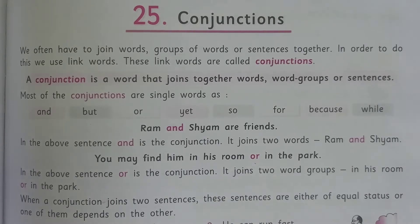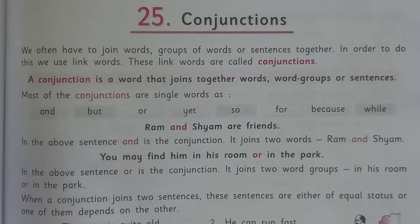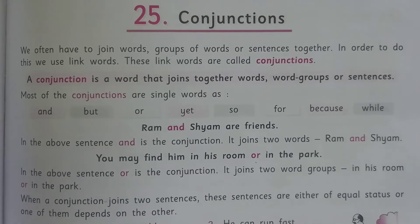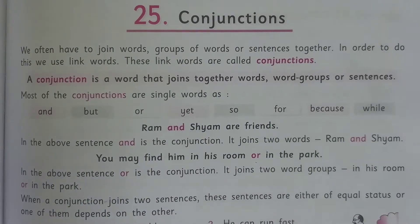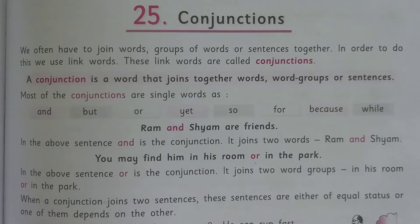When a conjunction joins two sentences, these sentences are either of equal status or one of them depends on the other. For example, the two sentences 'The man is quite old' and 'He can run fast' can be joined using the conjunction 'yet' — 'The man is quite old yet he can run fast.'